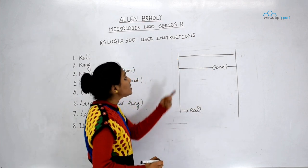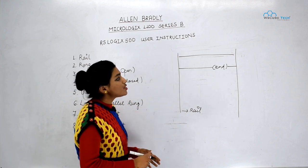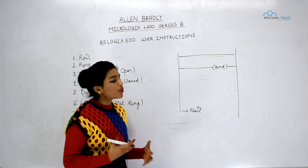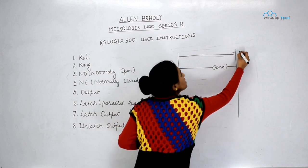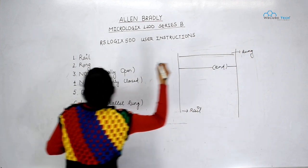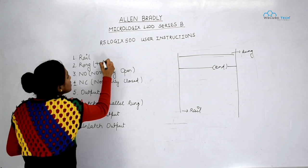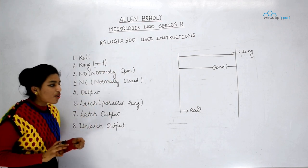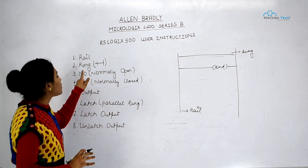Next, these horizontal lines in which we define our programming — we can call them RUNG. The symbol for a new RUNG you can see in the toolbar of the software.